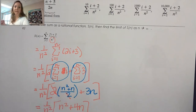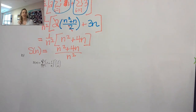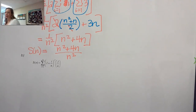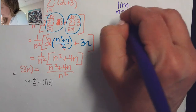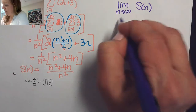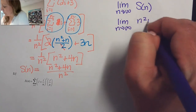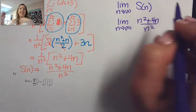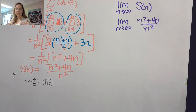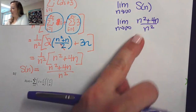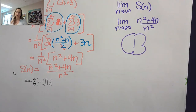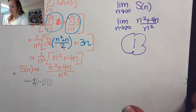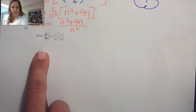Combining: (1/n²) × [(n² + n) + 3n] = (1/n²)(n² + 4n) = (n² + 4n)/n². Now we take the limit as n→∞ of (n² + 4n)/n². Since the degrees are equal, we divide leading coefficients: the limit is 1.